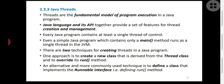There are two techniques to create threads in a Java program. Before explaining them, it's important to understand the difference between overloading and overriding. Overloading occurs when in the same class there are two or more methods with the same name but different parameters. Overriding means two or more different classes each have methods with the same name as well as the same parameters.